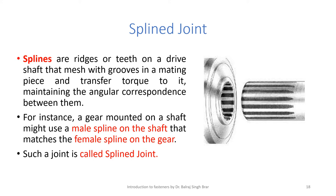The spline joint is a detachable joint and is an extension of the key joint. Its advantage is that very little force is required to move the rotor having female splines over the spline shaft. Splines are edges or teeth on a drive shaft that mesh with grooves in a mating piece and transfer torque to it, maintaining angular correspondence between them. Such a joint is used for power transmission where the distance between driving and driven shafts varies during application, such as farm implements.